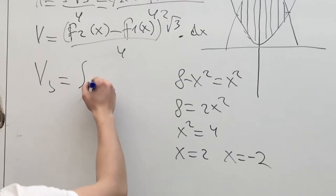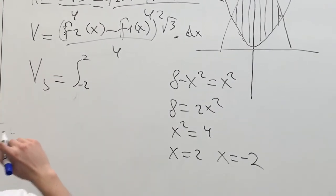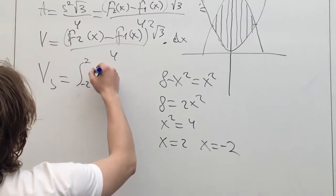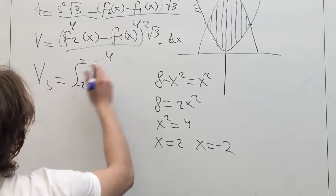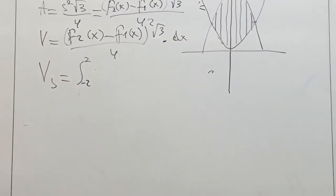We need to get 8 equals x squared plus x squared, 2x squared equals 8, x squared equals 4, so x equals 2 and x equals minus 2. Our bounds are minus 2 and 2.